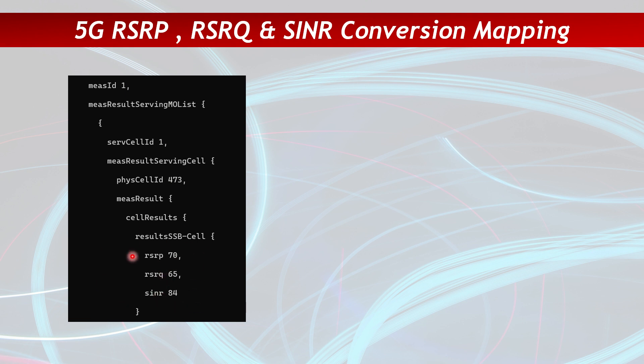These values come from the SSB, as I've explained in many previous sessions. For all mobility, accessibility, and RLF procedures, the UE uses the SSB. The SSB contains PSS, SSS, and PBCH, which I have explained in the 5G frame map video. The SSS is the signal that the UE uses to calculate the RSRP, RSRQ, and SINR.